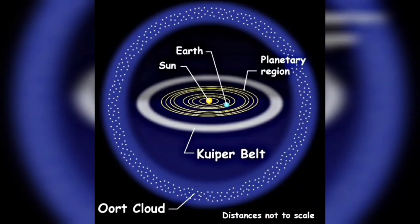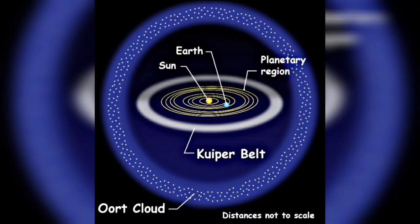Now let us study this picture. Comets usually come from the Oort Cloud, which is beyond our solar system, and a few from the Kuiper Belt, which is just beyond Neptune's orbit. Long-period comets come from the Oort Cloud, while short-period comets come from the Kuiper Belt.